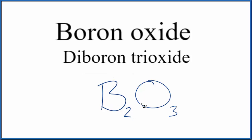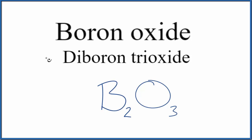Because this is the most common form of boron and oxygen bonding together, it's often just called boron oxide. So boron oxide or diboron trioxide — both give you B₂O₃. If you're in a school setting, it's more likely that you'll be given diboron trioxide and asked to write the formula.